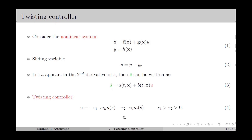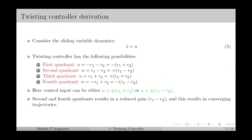Therefore, based on the sign of s and s-dot, the control input u can take 4 different values: minus r1 minus r2, minus r1 plus r2, plus r1 plus r2, and plus r1 minus r2. To illustrate this in more detail, we consider the sliding variable dynamics as in equation number 5, in which a is taken as 0 and b as 1, resulting in a double integrator dynamics.